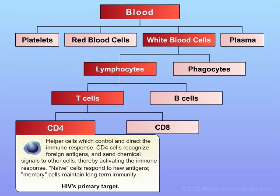Naive cells are ones that can respond to new antigens, and these cells can then become memory cells that in turn can maintain long-term immunity or memory in regard to antigens and infectious agents that have previously been seen or recognized. CD4 cells are the primary target of HIV.